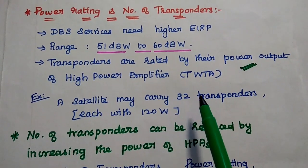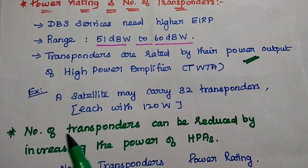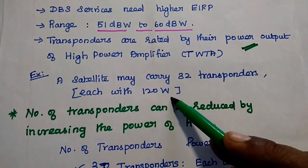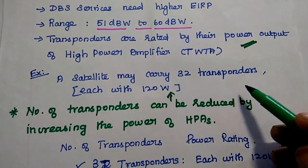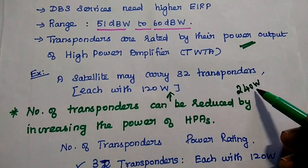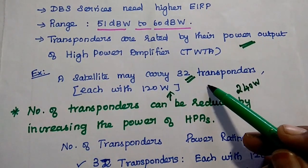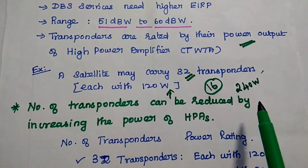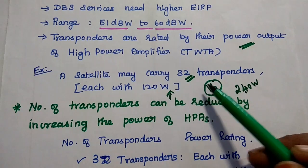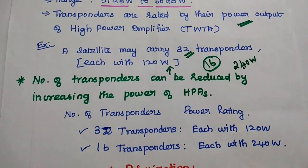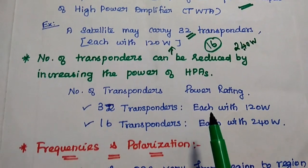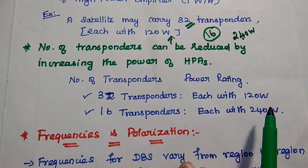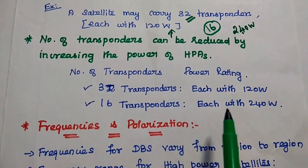For example, a satellite may carry 32 transponders each with 120 watts. If we increase the output power of the transponder to 240 watts each, instead of 32 transponders we can only have 16 transponders. So the number of transponders is reduced by increasing the power of the high power amplifiers. In other words, 32 transponders at 120 watts each is equivalent to 16 transponders at 240 watts each.